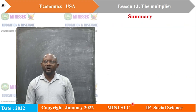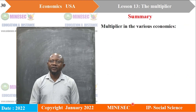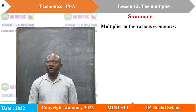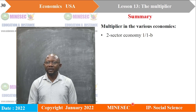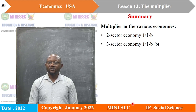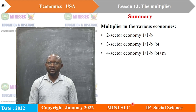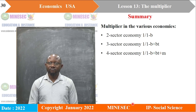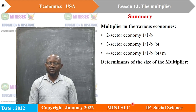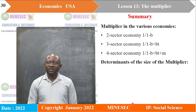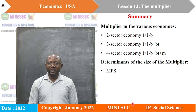In this lesson we covered the multiplier in the two-sector economy (K = 1 over 1 minus B), the three-sector economy (1 over 1 minus B plus BT), and the four-sector economy (1 over 1 minus B plus BT plus M). The determinants of the multiplier are MPS, MPT, and MPM.